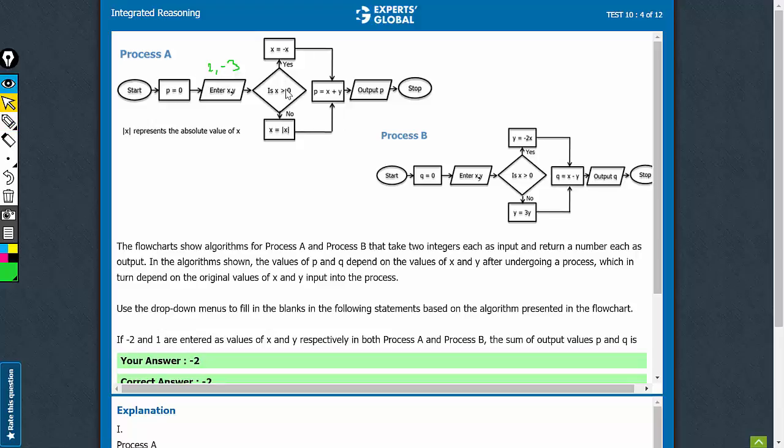Is x greater than 0? Yes. So, x becomes minus 2 here. p is equal to x plus y. So, minus 2 plus minus 3. That becomes minus 5 here. Output p is minus 5.